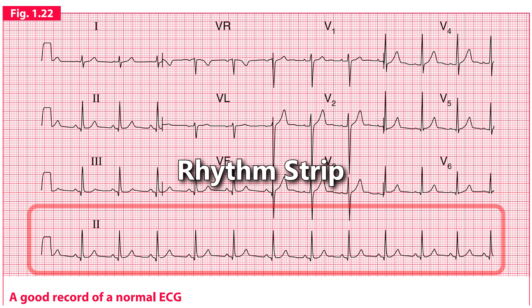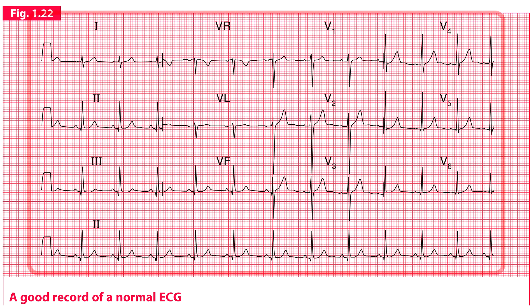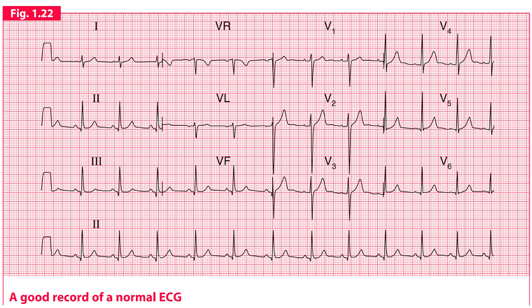This is called the Rhythm Strip. It is a continuous record of lead 2, produced by most ECG recorders as it helps to identify abnormal rhythms. This is the common arrangement in which leads are present on an ECG paper. However, slight variations in arrangement may be present from some ECG recorders.